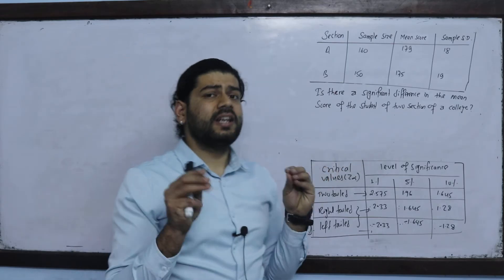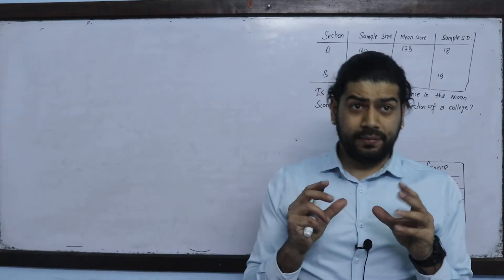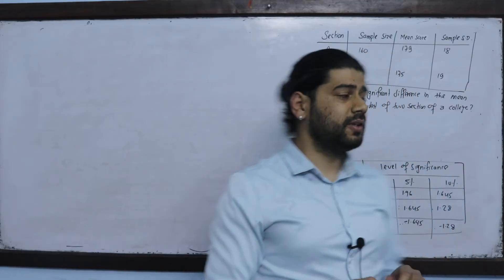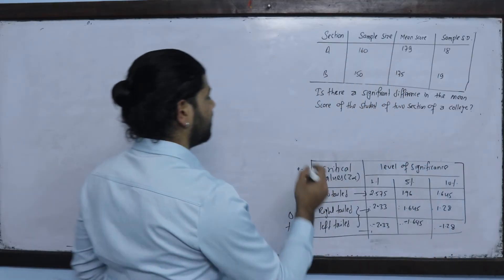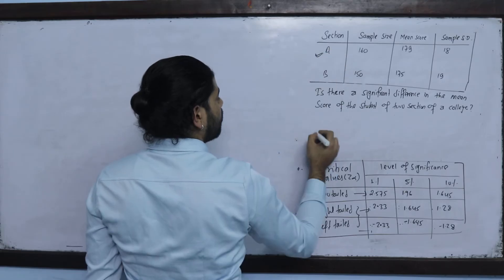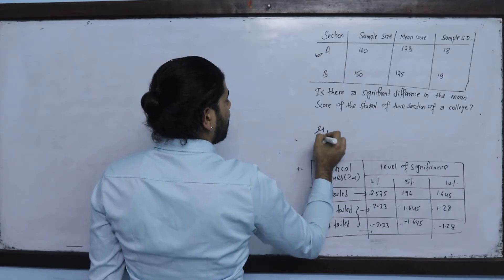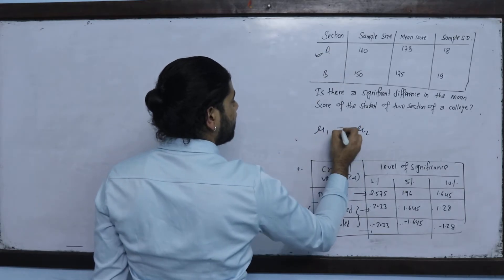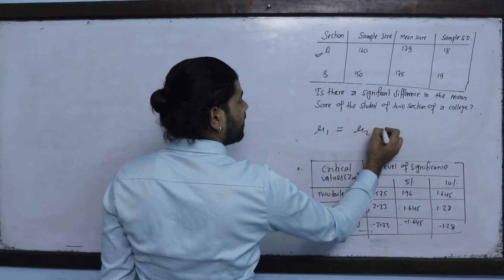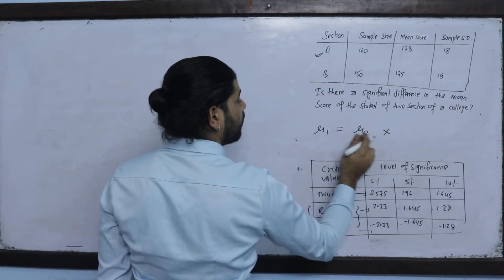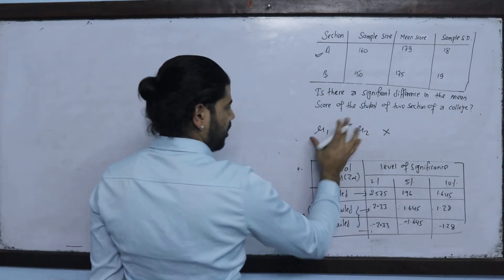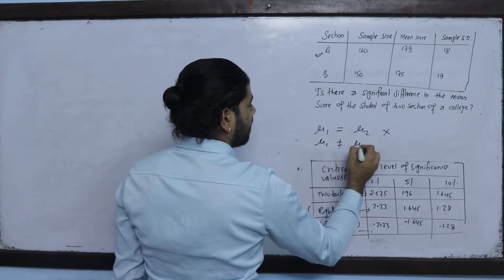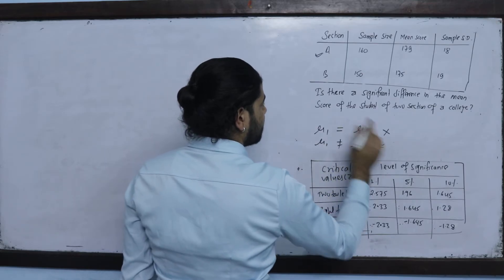In this problem, we need to determine whether the mean score is different between the two populations — population A and population B. The null hypothesis states there is no significant difference, while the alternative hypothesis states there is a significant difference.